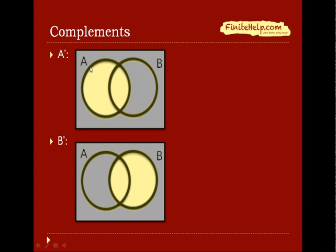A complement would be everything that's not in A. Here you can see the shaded area, which is everything that's not in A, but in the rectangle. And here the same way for B prime, which is everything that's not in B.